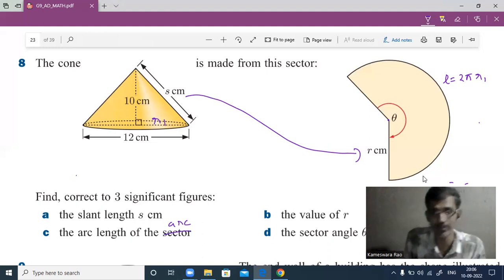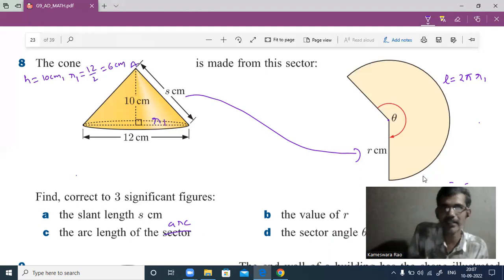For the cone, two heights are there: one is the vertical height, given as 10 centimeters. The radius of the cone r is denoted here. The diameter is available, and the radius is half the diameter, which is 6 centimeters. Now you have to find the slant height. A right-angle triangle is there, so you can apply the Pythagoras formula.